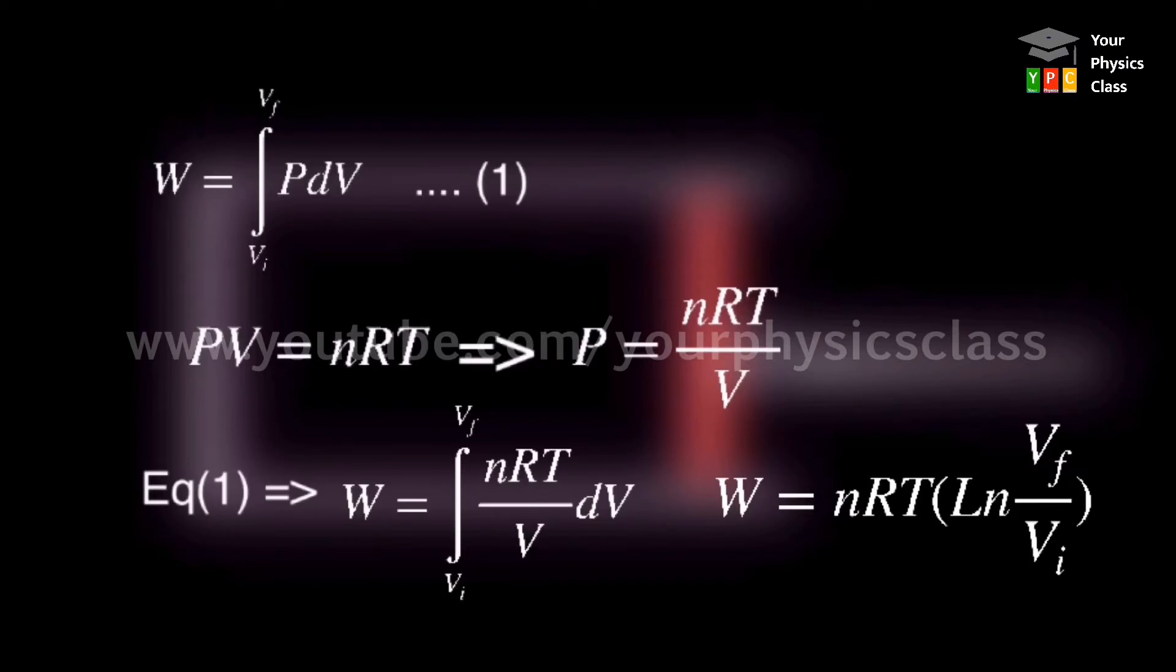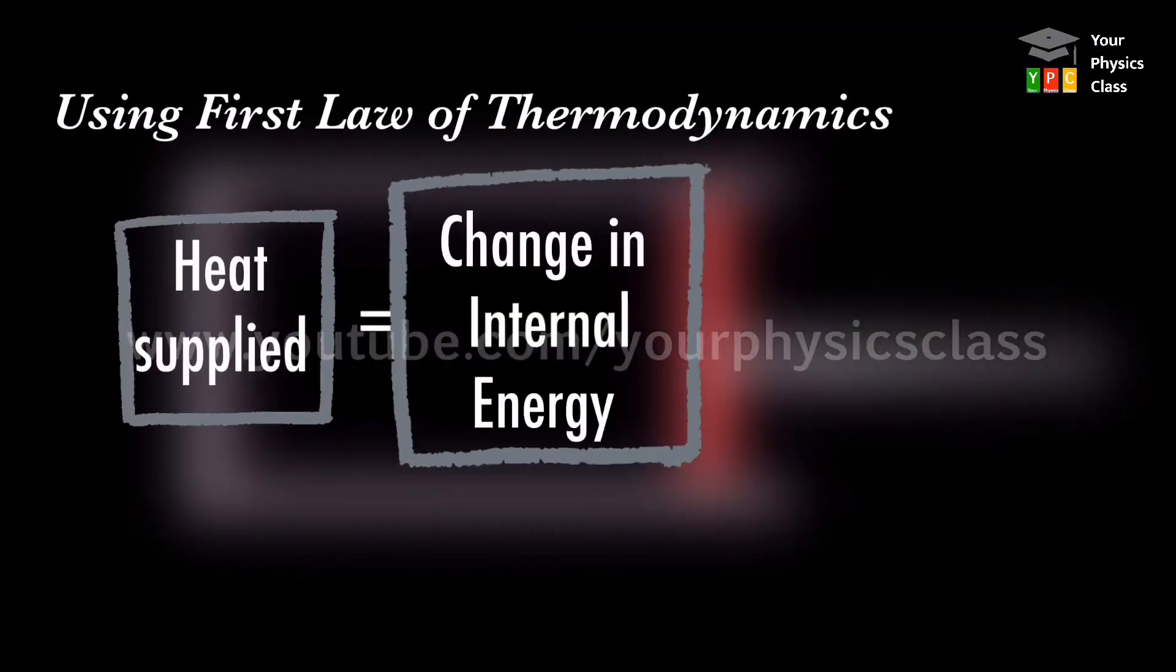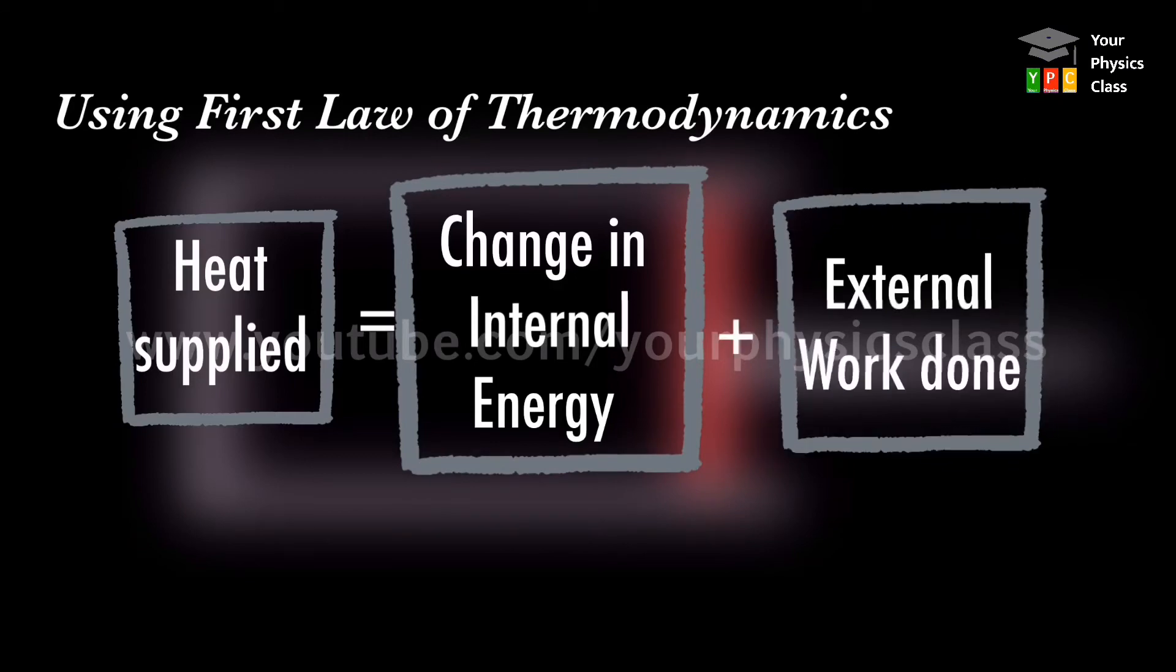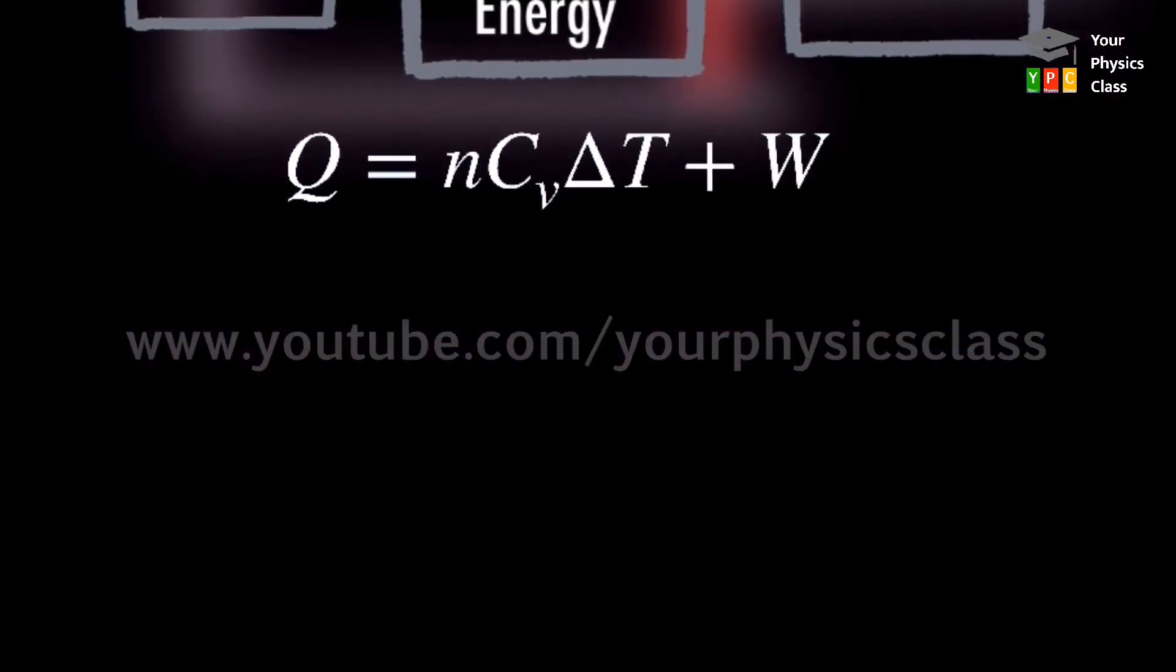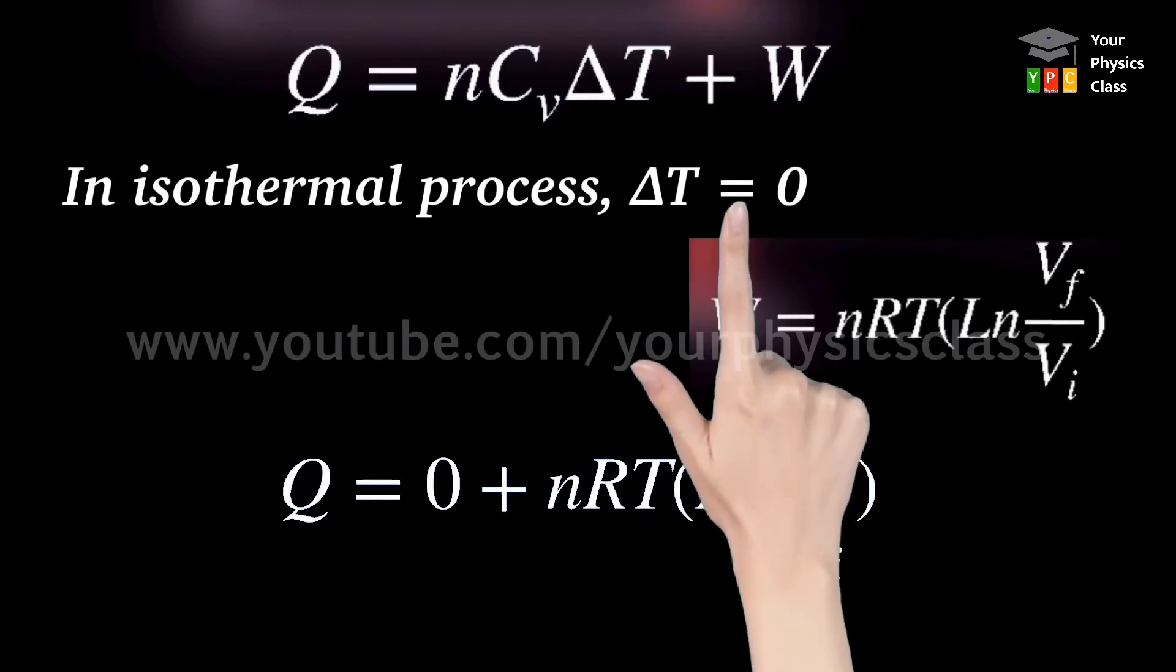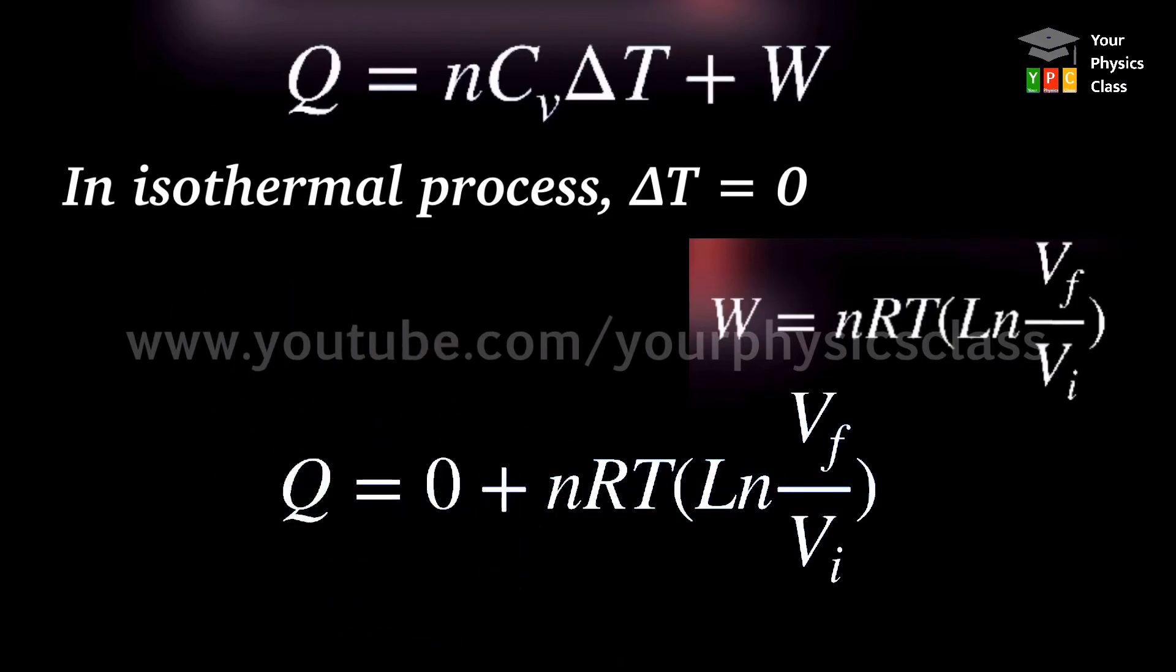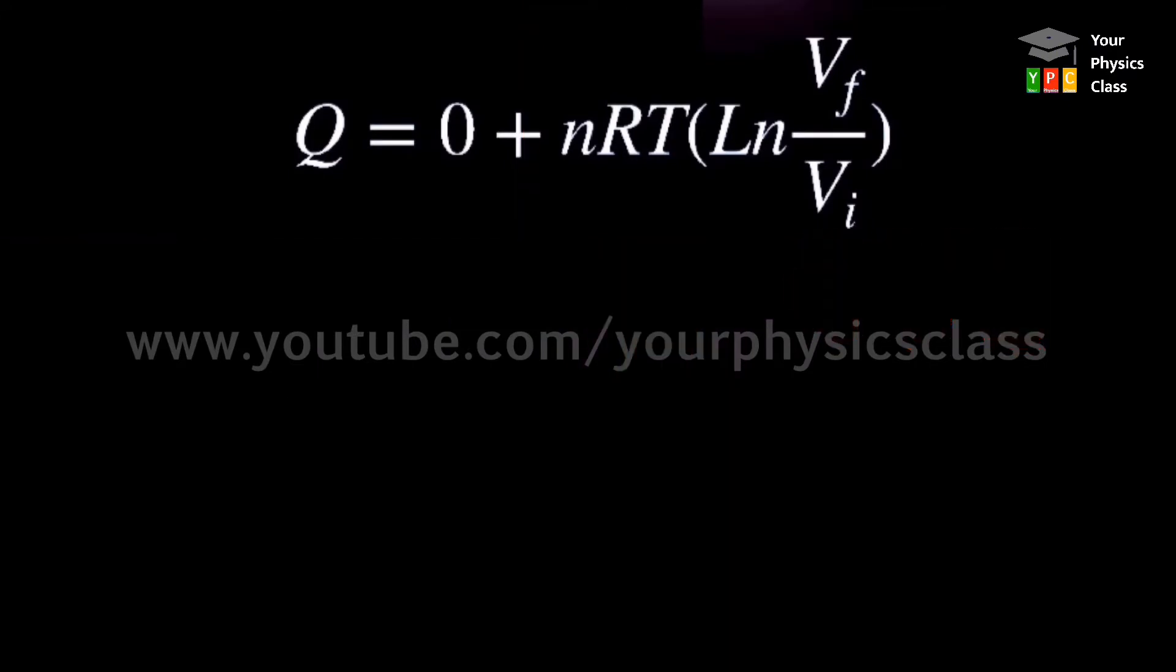Now, using first law of thermodynamics, heat supplied is equal to change in internal energy plus external work done in the expansion. So we can write this as Q equals n times Cv delta T plus W. Therefore, Q equals zero plus nRT natural log of Vf upon Vi. Here, change in temperature is zero since the process is isothermal. That is why the first term becomes zero. When gas expands, Vf becomes greater than Vi, then system does positive work, and does negative work when gas compresses, that is Vf is less than Vi.